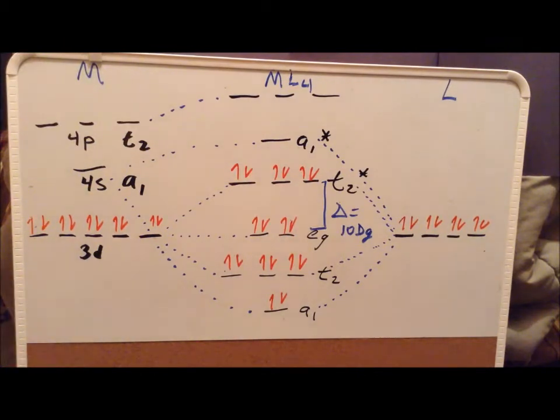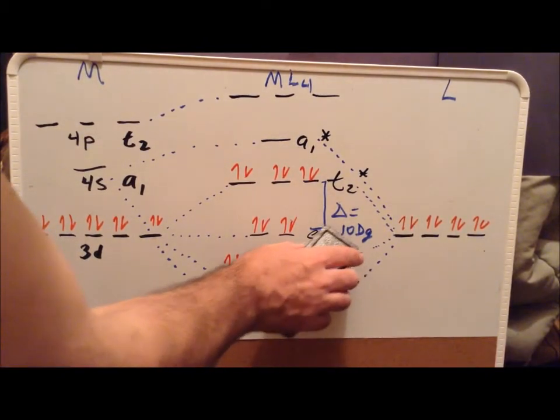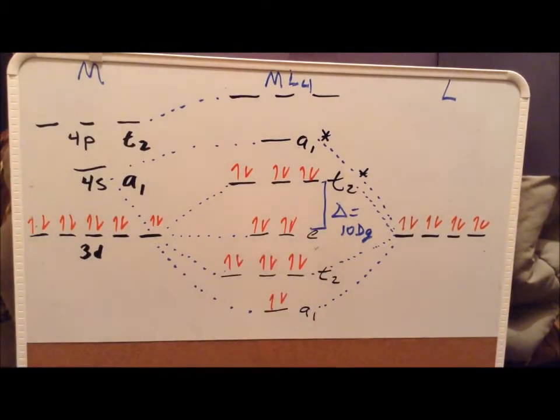Without a g, it should be E. It has to be E because since the point group TD does not have a center of inversion, we don't have gerade or ungerade. So that should be E.